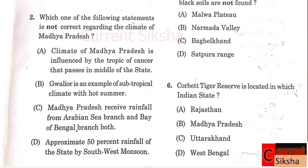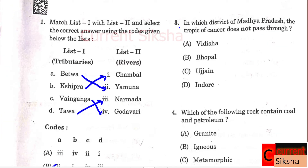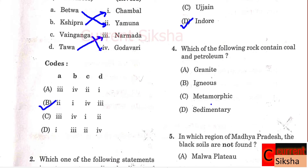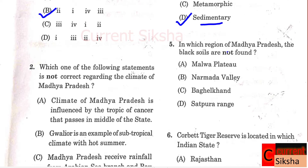Question 2: Which statement is not correct regarding the climate of Madhya Pradesh? Correct option D - approximately 50 percent rainfall of the state by southwest monsoon is wrong. Question 3: In which district of Madhya Pradesh does the Tropic of Cancer not pass through? Correct option D - Indore. Question 4: Which of the following rock contains coal and petroleum? Correct option D - sedimentary rock contains coal and petroleum.